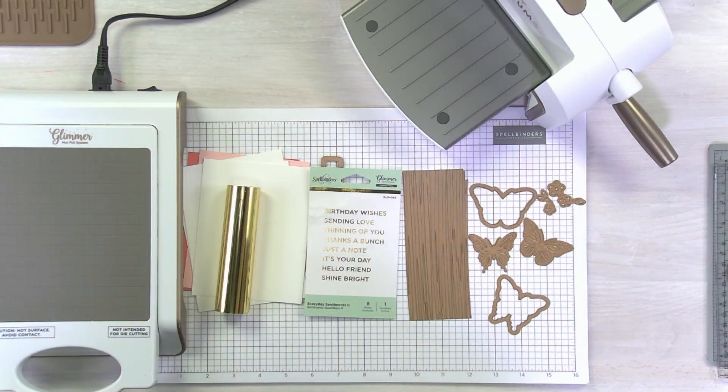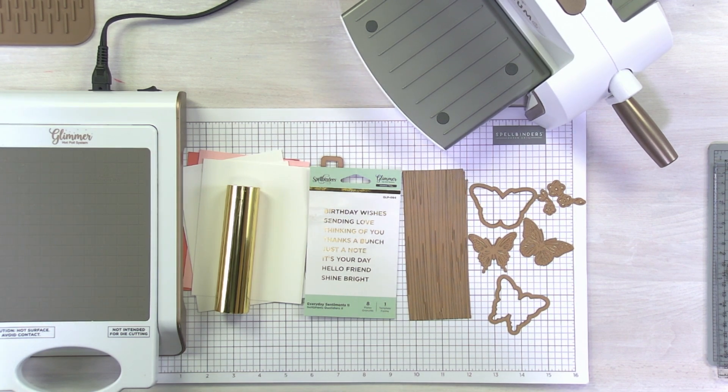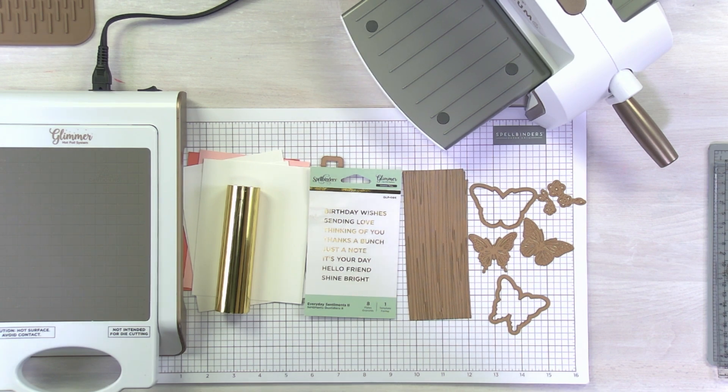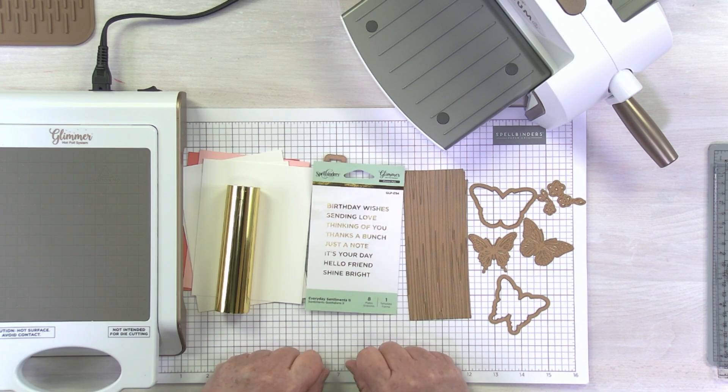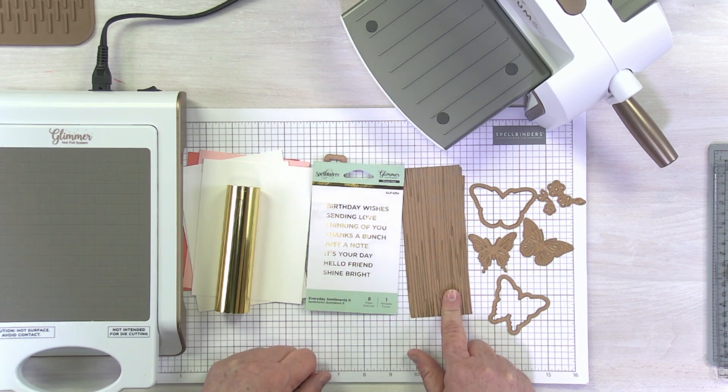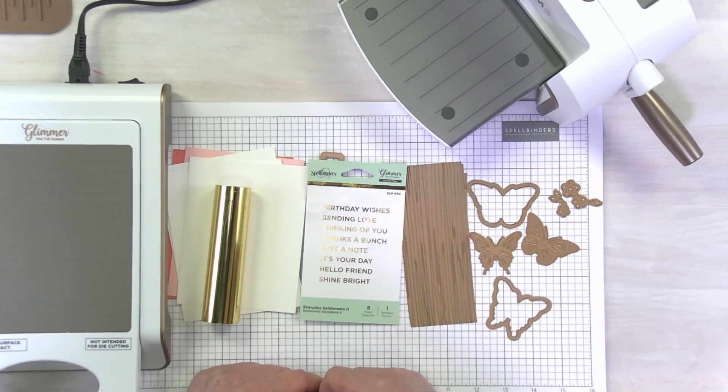I'm going to walk you through three different types of Glimmer Plates. We're going to foil all three of them and then put them together to create a project that I think you're going to absolutely love. I have a sentiment set, this is our Everyday Sentiments 2. I have a background plate, this is Modern Lines, one of my favorites, and I have a set of glimmering butterflies.